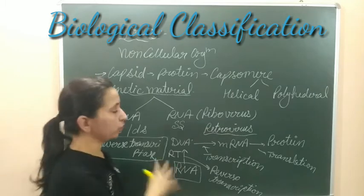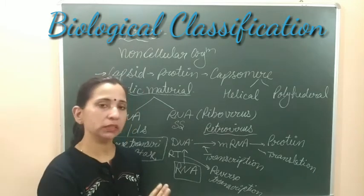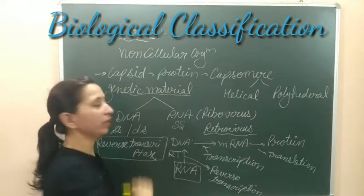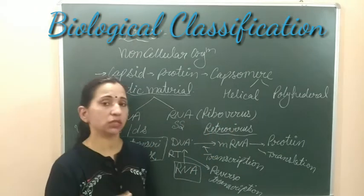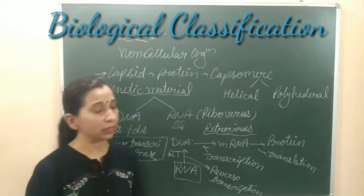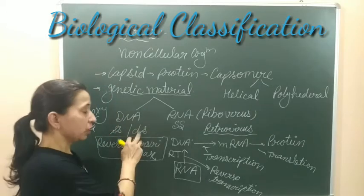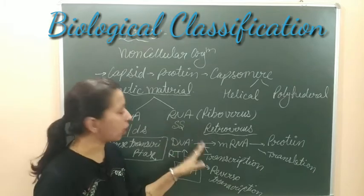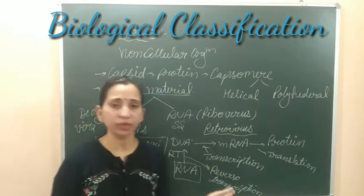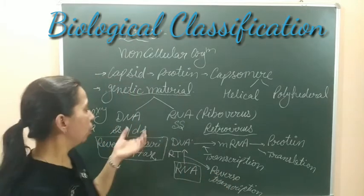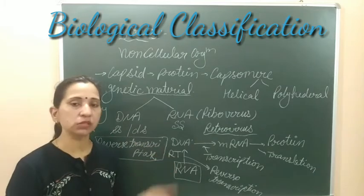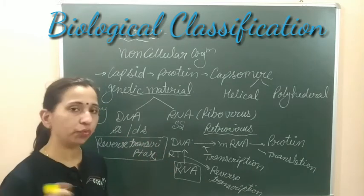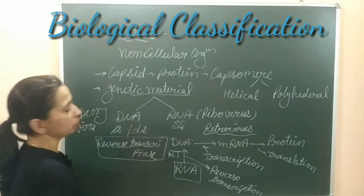Plant viruses are mainly RNA-containing viruses — RNA viruses cause diseases in plants. Whereas animal viruses could be DNA viruses or, in some cases, RNA viruses. But in most cases, DNA viruses — whether double-stranded or single-stranded — are the ones that cause disease in animals.